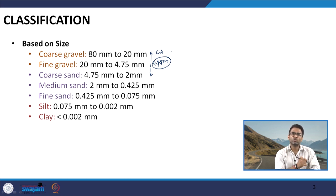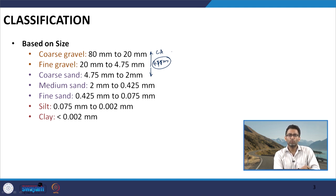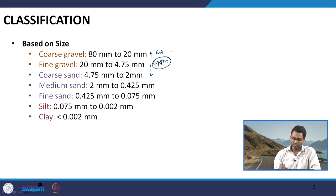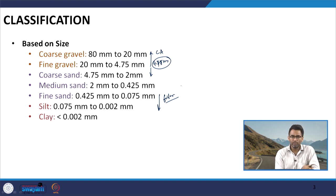Within fine aggregates, coarse sand ranges from 4.75 mm to 2 mm, medium sand from 2 mm to 425 microns, and fine sand from 425 microns to 75 microns. Materials passing the 75 micron sieve are called fillers. We also have silt, ranging from 75 microns to 0.002 mm, and clay particles smaller than 2 microns.